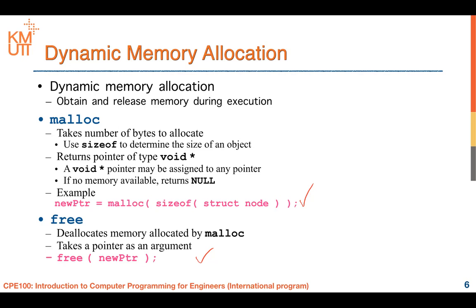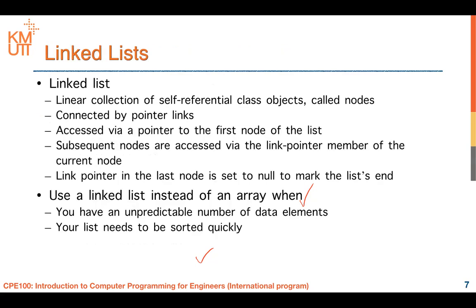Now we have learned how to use dynamic memory allocation with malloc. The next topic I would like to introduce is the linked list. A linked list is a linear collection of self-referential objects - or we can call them nodes. When we refer to an element of a linked list, tree, stack, or queue, we call it a node. Nodes are connected by pointer links and can be accessed via a pointer to the first node of the list.